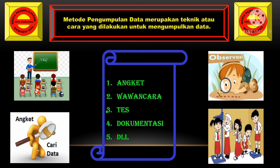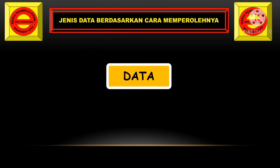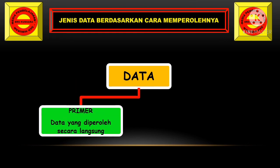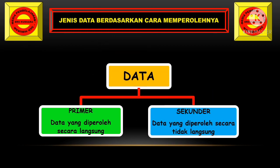Yang terakhir kita akan membahas jenis data berdasarkan cara memperolehnya. Ada dua cara: yang pertama disebut data primer, adalah data yang diperoleh secara langsung. Ada juga namanya data sekunder, atau data yang diperoleh secara tidak langsung.